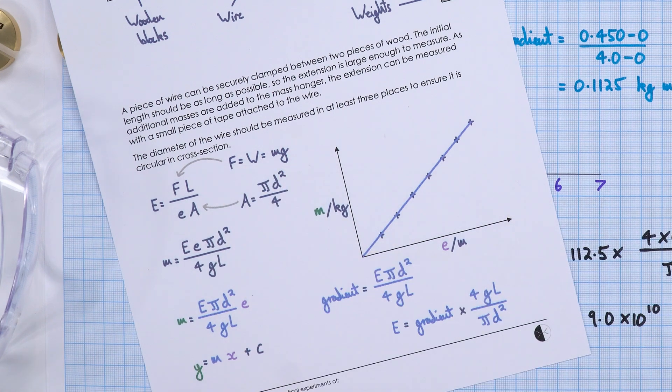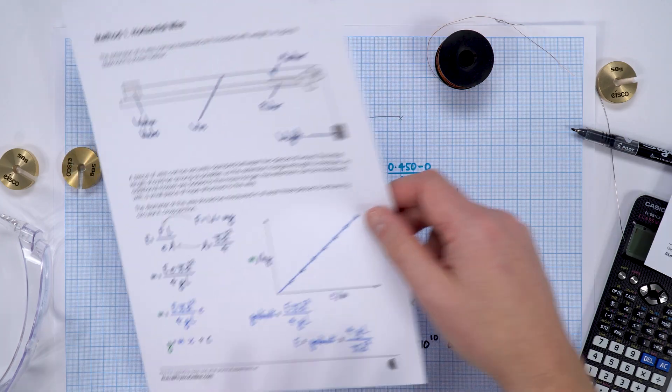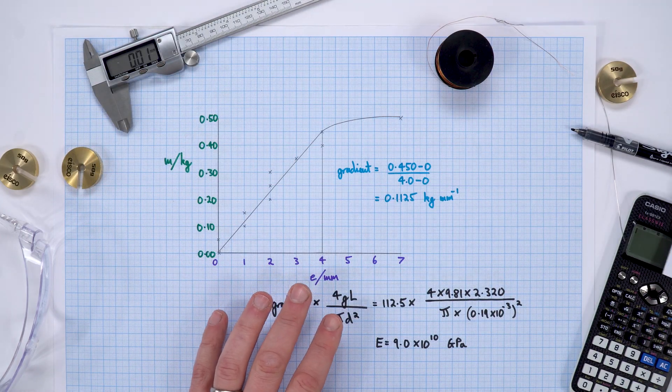I said that the Young's modulus is equal to the gradient times 4gl over πd². That was my method, which I explained in the other video.